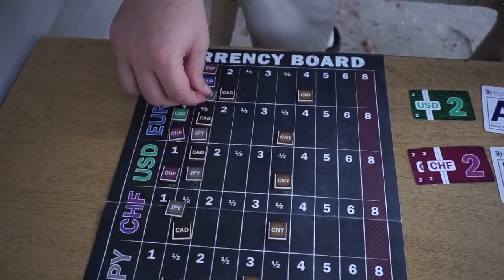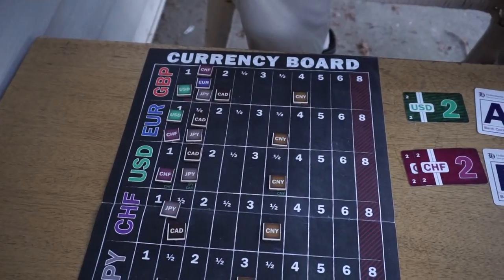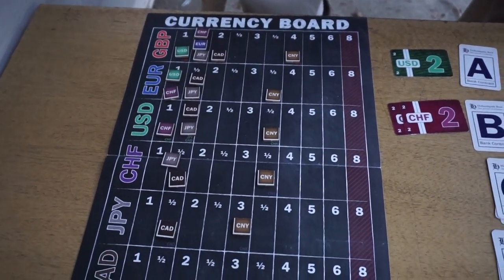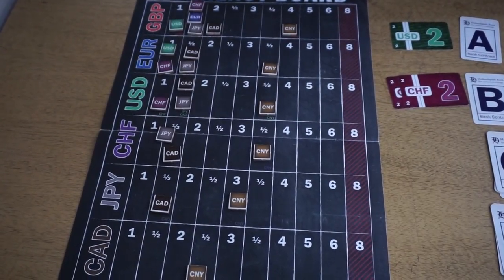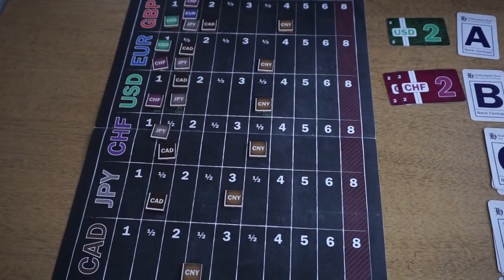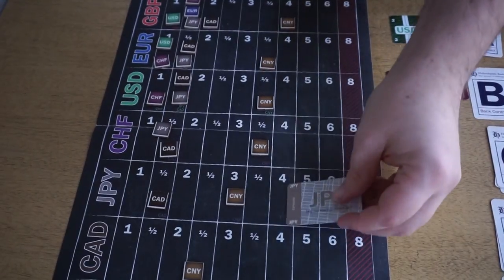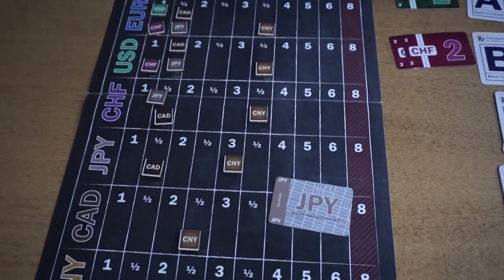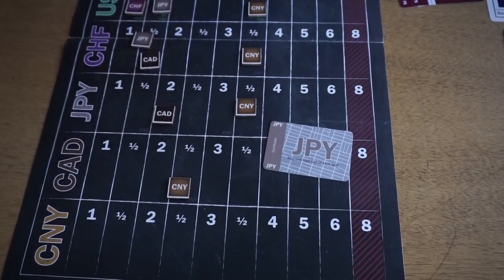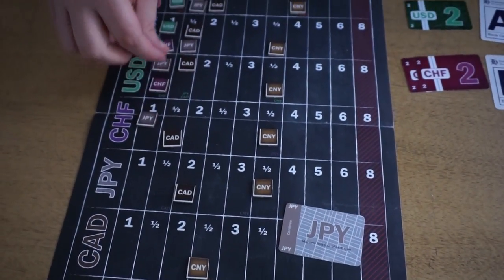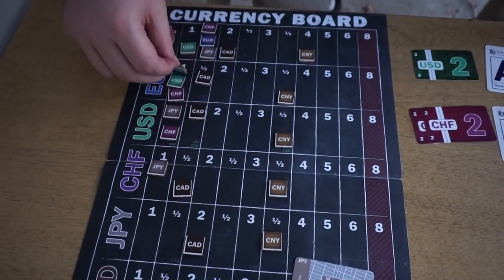So on your turn, you're going to be taking one of four actions. The first action you can take is you can invest in the currency by buying a certificate, a stock in that currency. Basically, you're investing in that world economy. So if I invest in the JPY, then I'm going to make that adjustment where the JPY gets stronger. So we're going to strengthen the JPY as such.